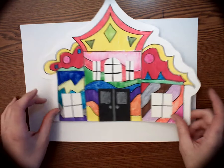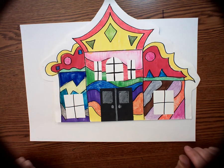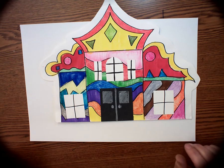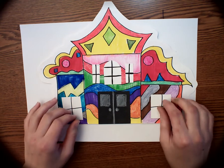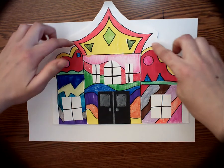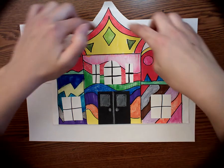Today we're going to learn how to start our Hundertwasserhaus. It's a very colorful house. It has three different parts of the building - a main part and two side parts. And then it has a roof on each part of the building.